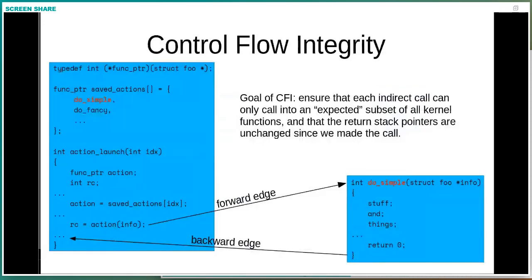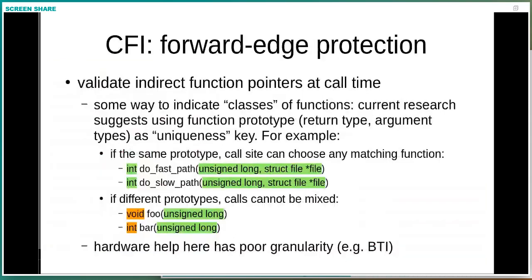The goal of CFI is to ensure that the forward and backward edges are actually going to expected places — effectively a subset of all possible entry points into kernel code. If we validate indirect function pointers at call time, one way to chop down what can be called is to look at the classes of functions and the prototype of the function. For example: returning int, taking an unsigned long and a struct file. You can generate a hash of those prototypes, and therefore different prototypes can't be mixed.